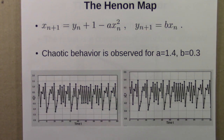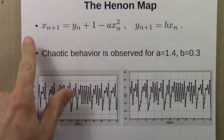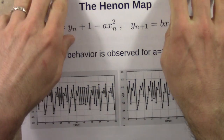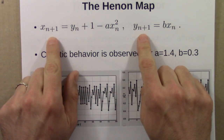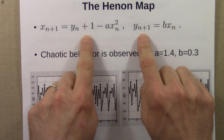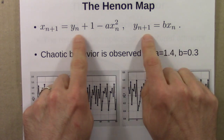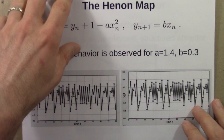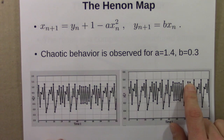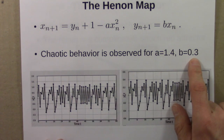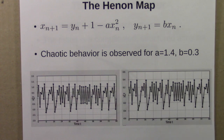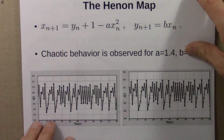The first example was the Henon Map. This is a discrete two-dimensional mapping. There are two variables, x and y, and they jump forward in time from time 1 to 2 to 3 by applying this rule, which says that the next x and y value is a function of the current x and y values. There are two parameters, a and b, and we observe chaotic behavior for some parameter values. Here's one of those chaotic parameter values — the standard one that Henon discovered.